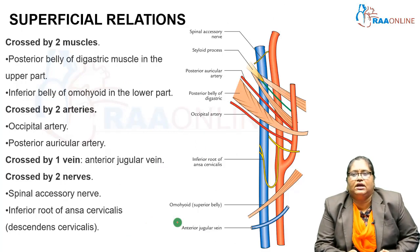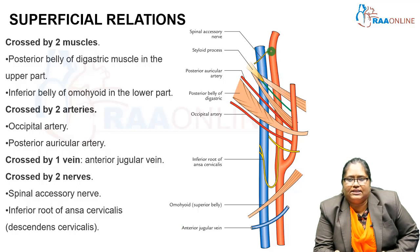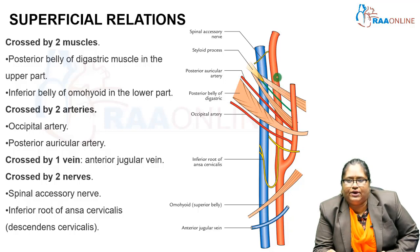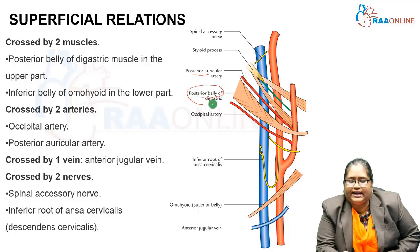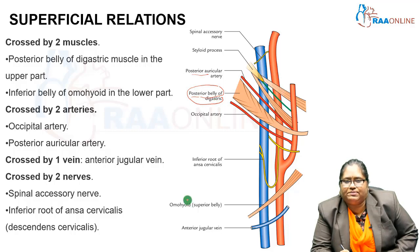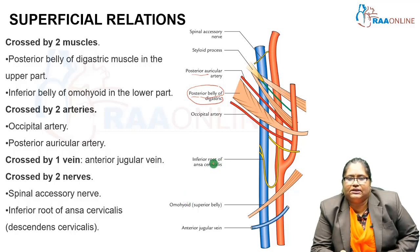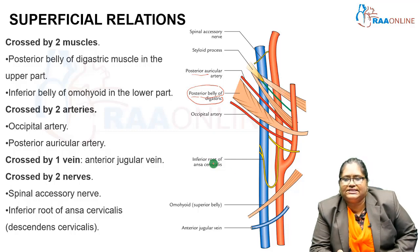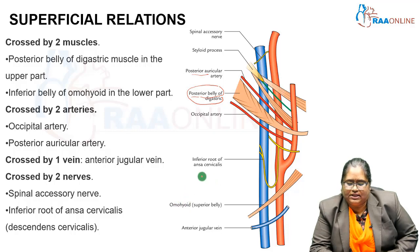The relations of the internal jugular vein are divided into superficial, posterior, and medial. Superficially, the vein is crossed by two muscles: the posterior belly of the digastric muscle in the upper part, and the inferior belly of the omohyoid in the lower part. These are the two muscles crossing the internal jugular vein.